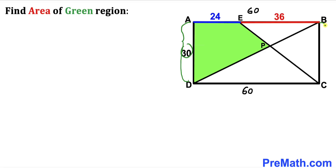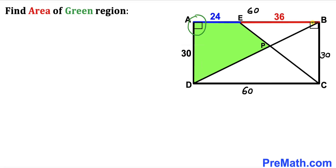Since AD is 30, side BC is also 30 units. And since we are dealing with rectangle ABCD, all four angles are 90 degrees each.